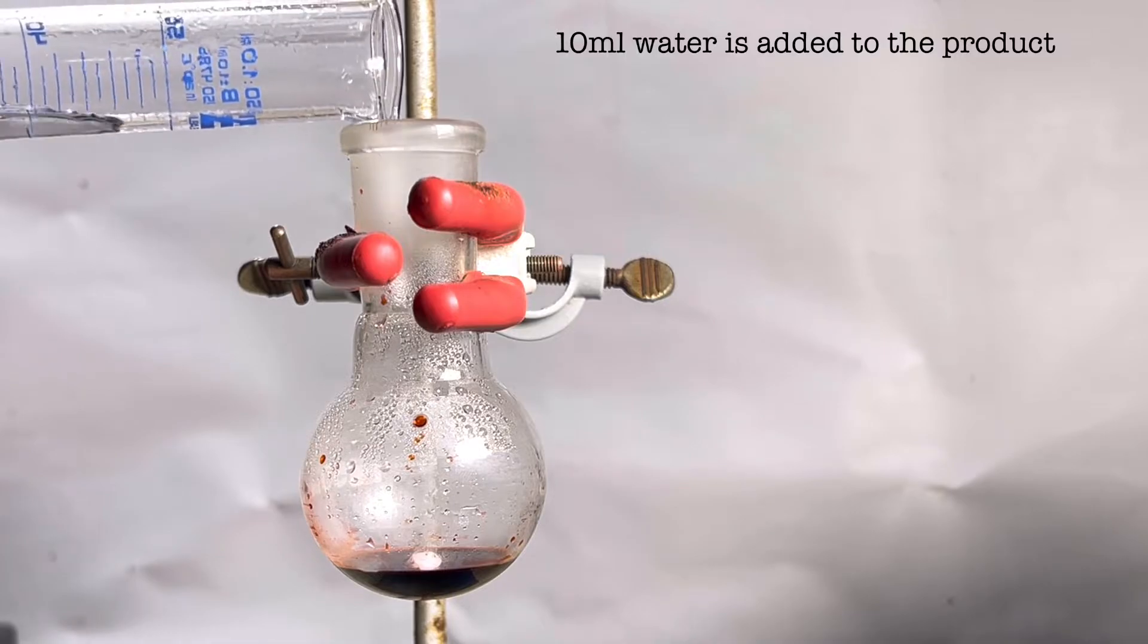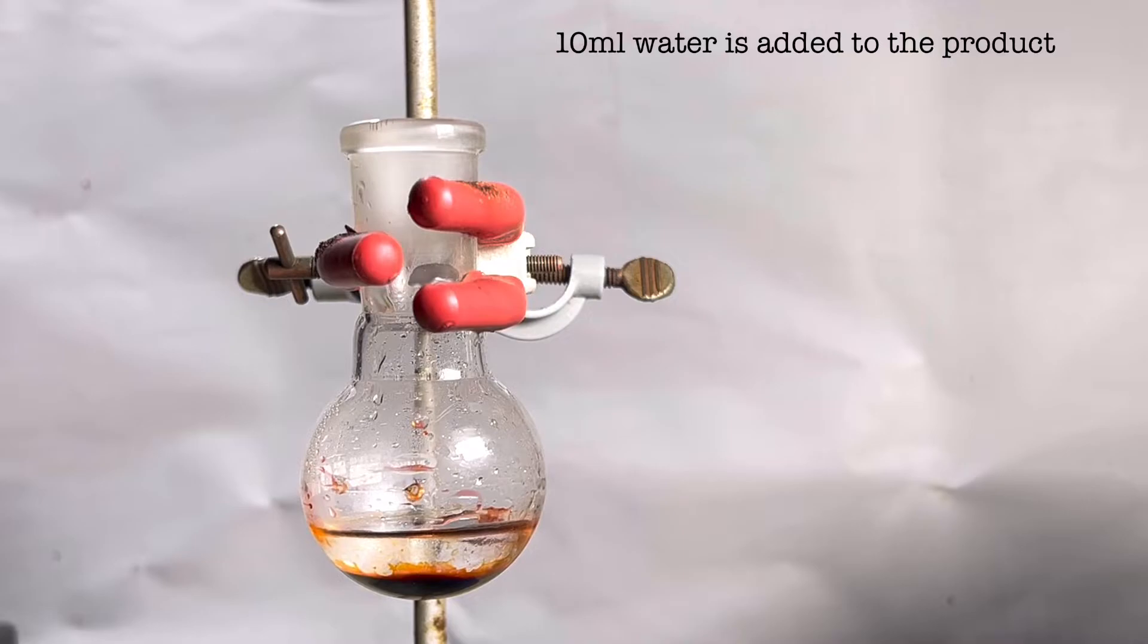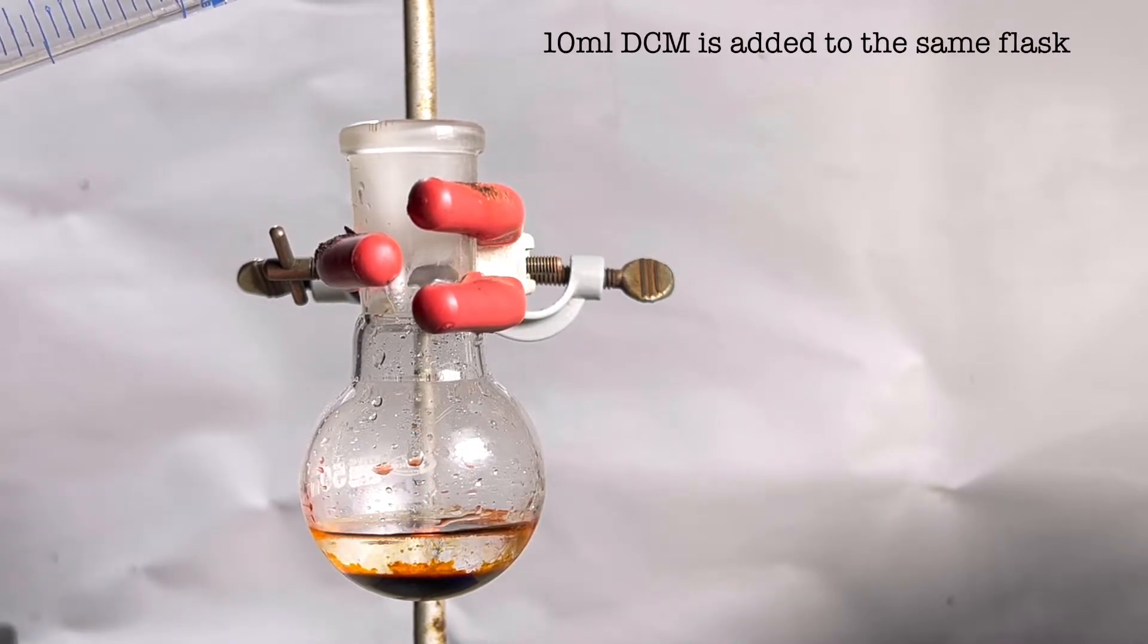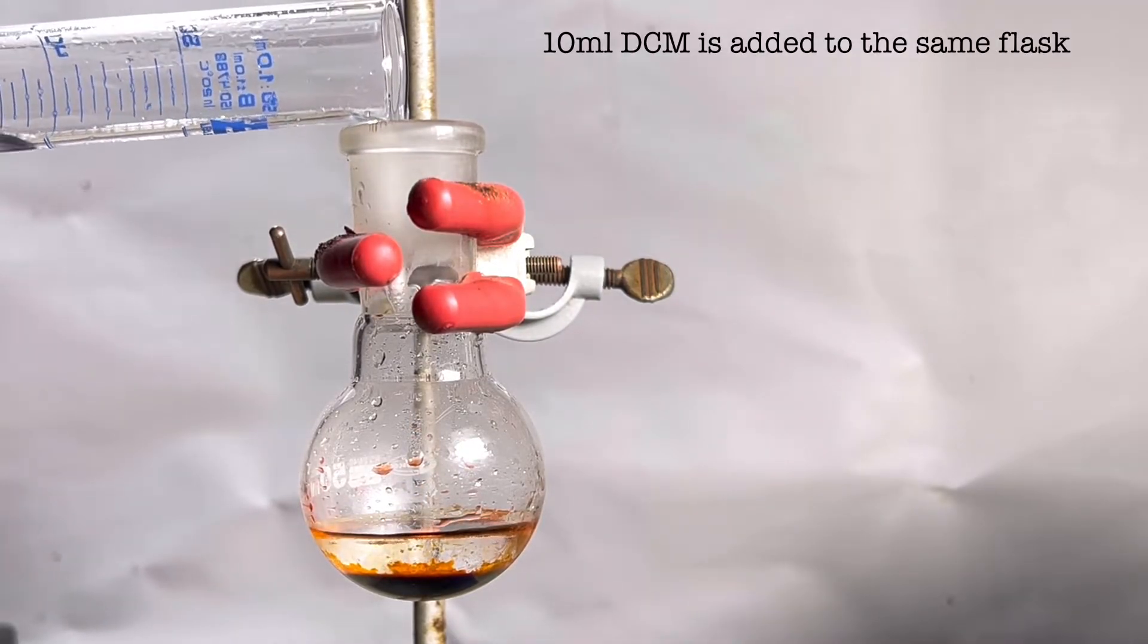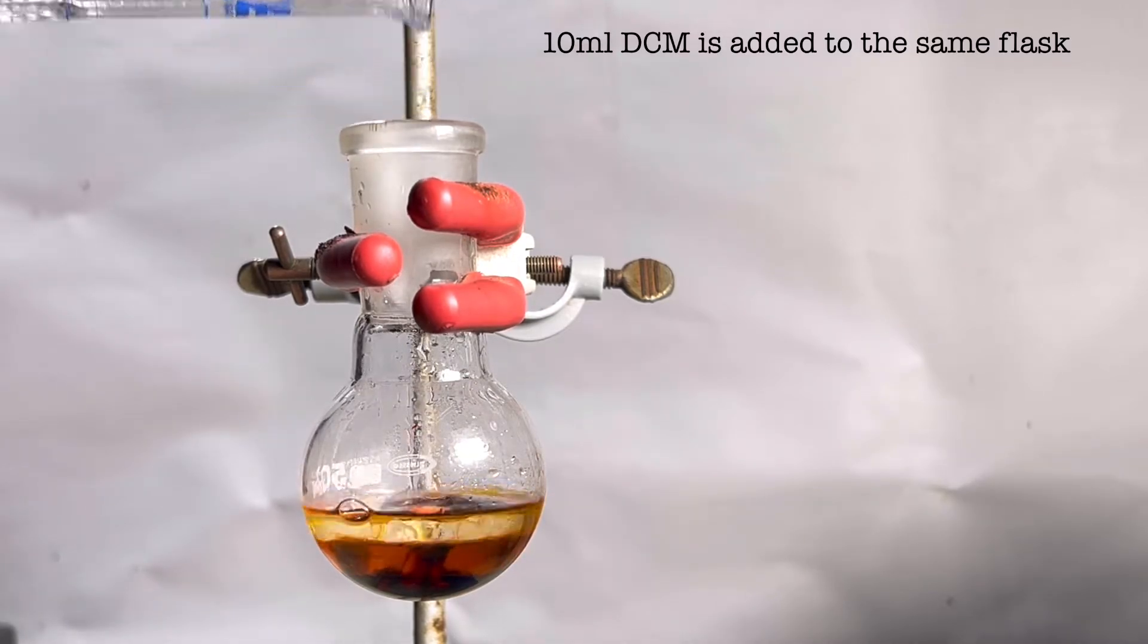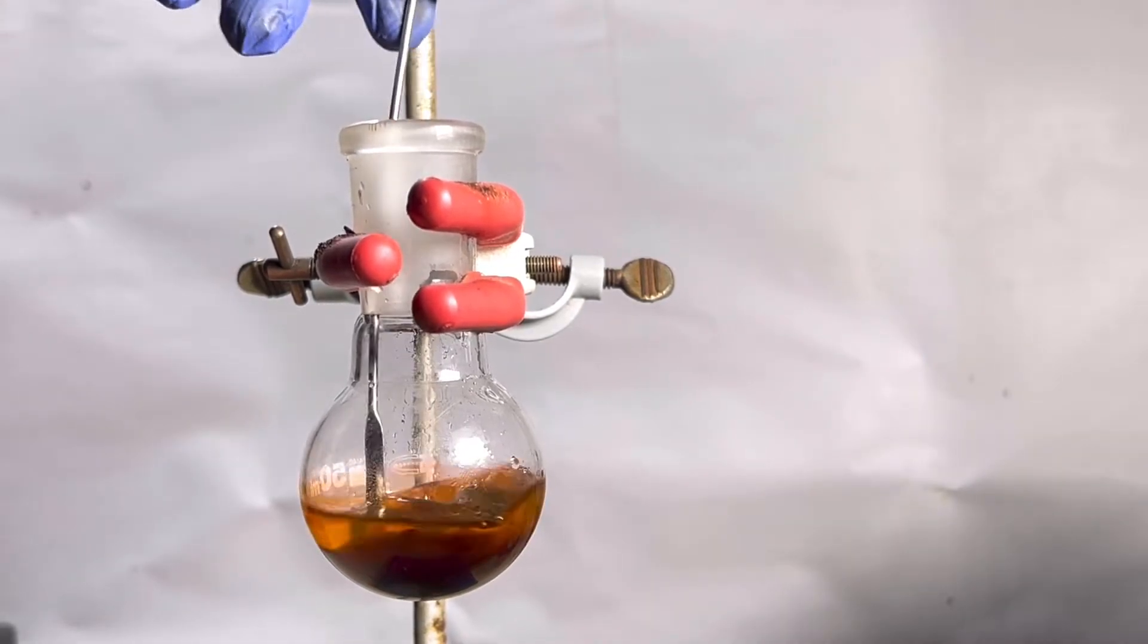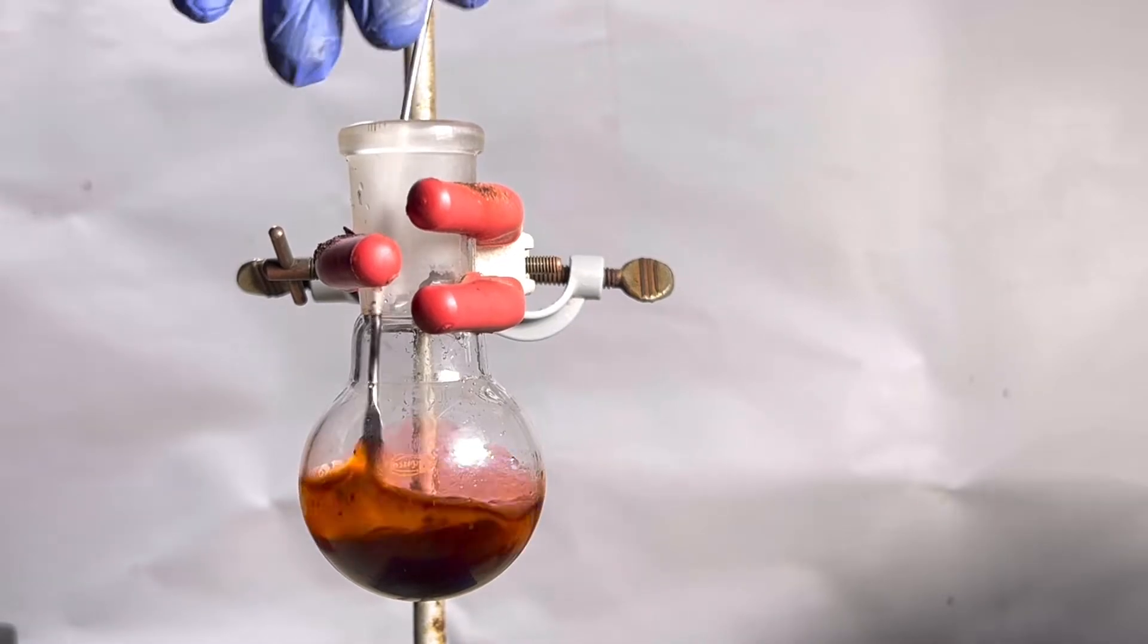10 ml of distilled water was added to the round bottom flask. This was followed by the addition of 10 ml of dichloromethane. Now the solid bottom layer was broken up using a spatula. This helped the stirring bar to stir as it was stuck in the solid.